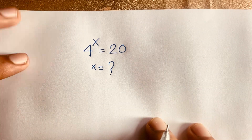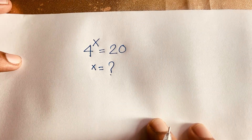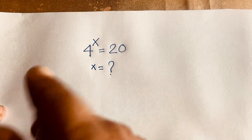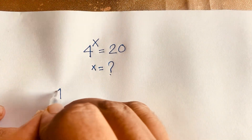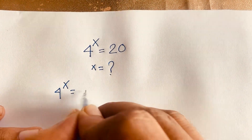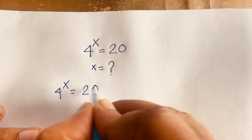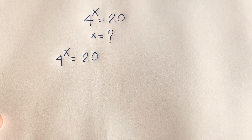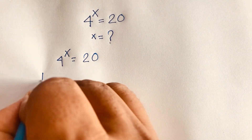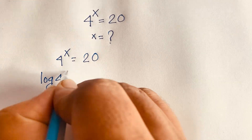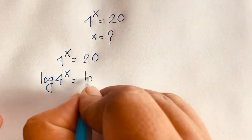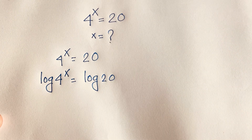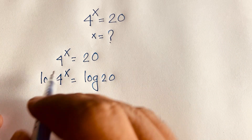Our question is: 4 to the power x is equal to 20. To solve this exponential equation, we apply the natural log to both sides, giving us log(4^x) = log 20.